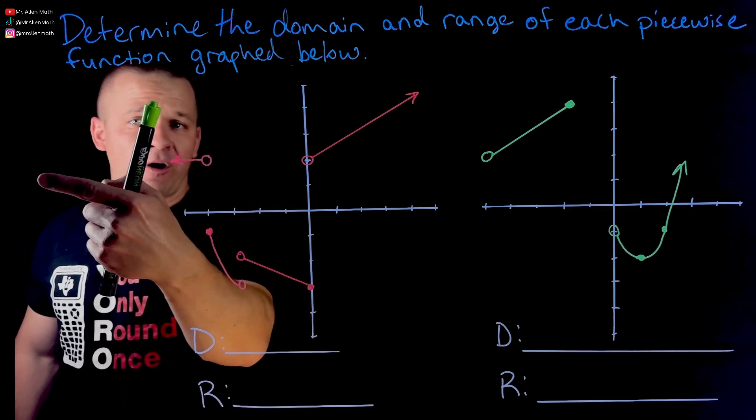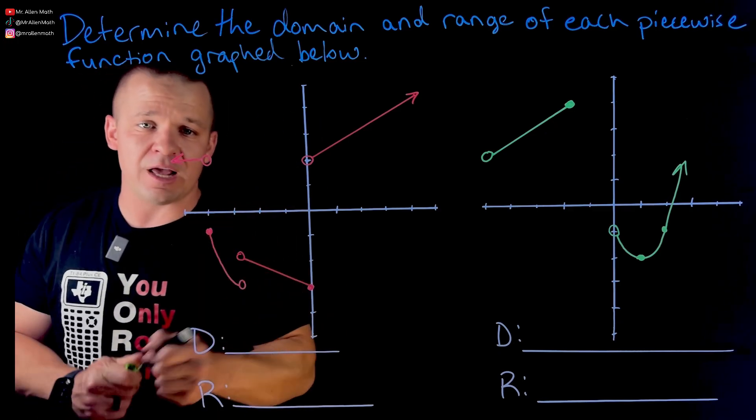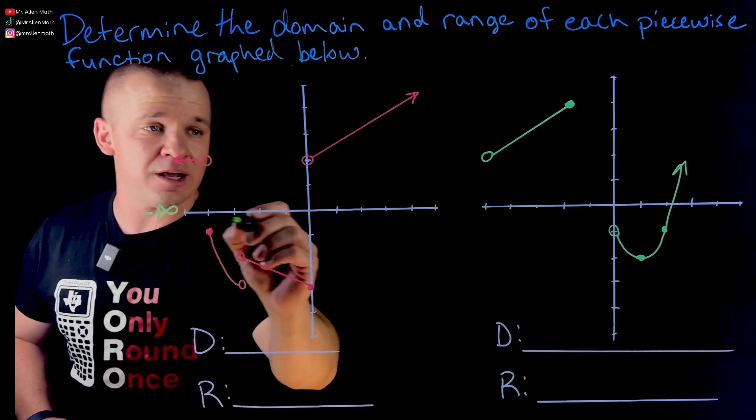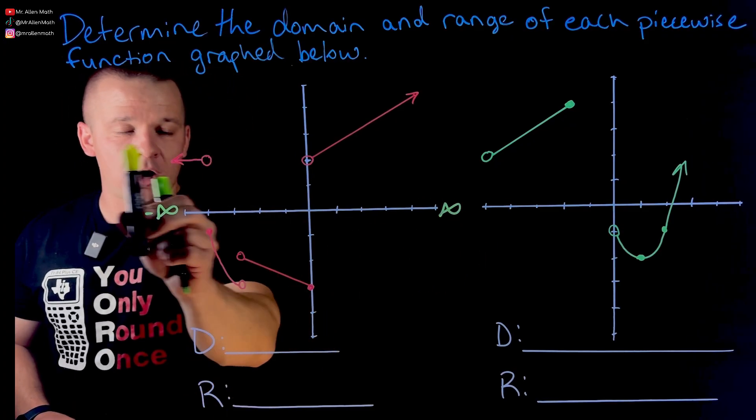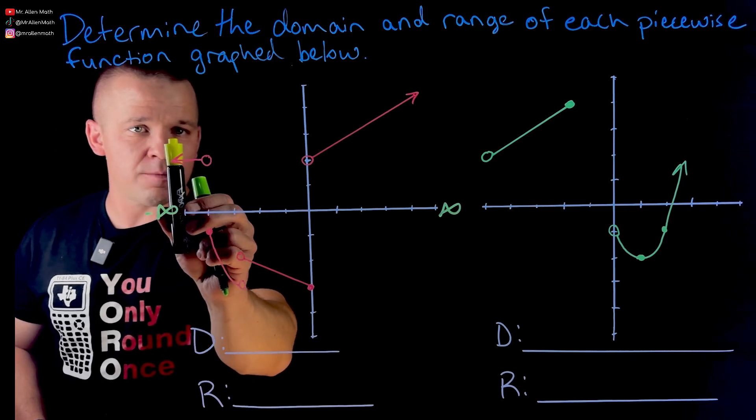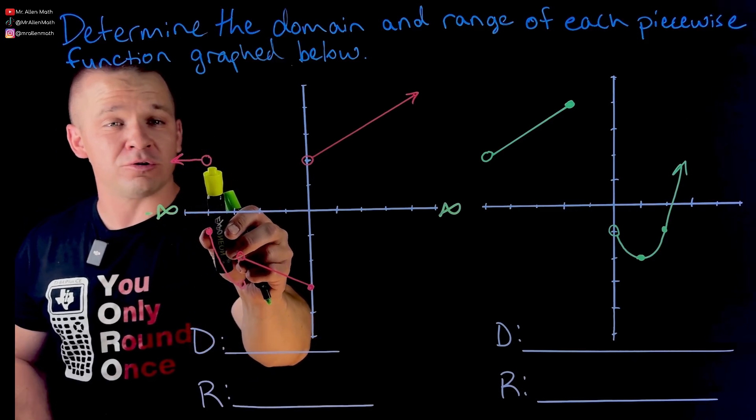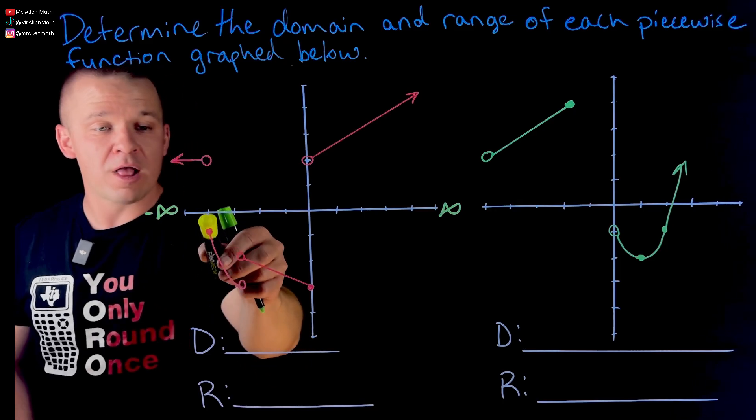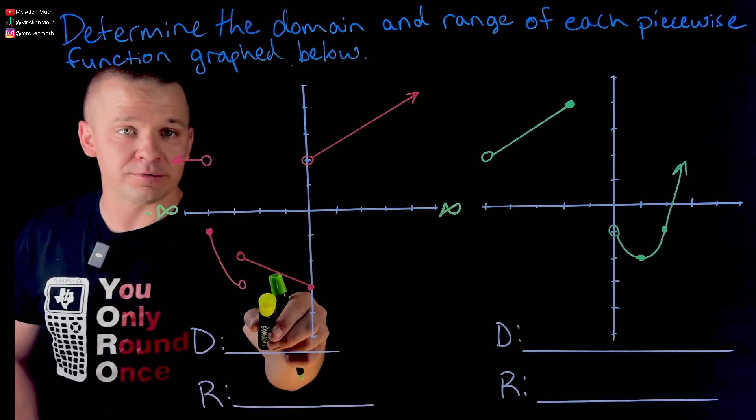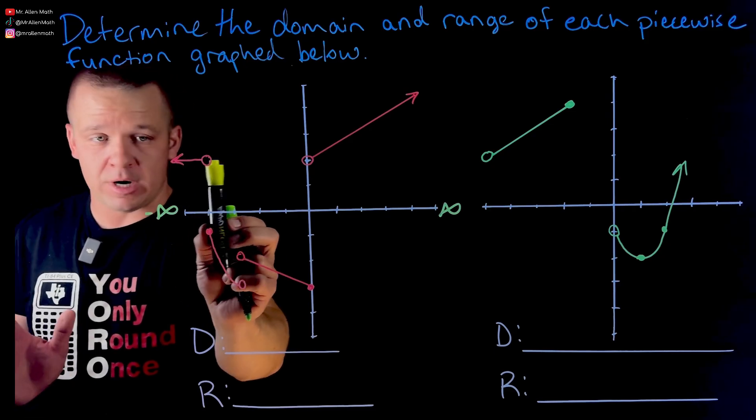So over here, this graph goes far left, all the way to negative infinity. I'll write a negative infinity here and a positive infinity there. Now as I come across this graph, open circle. Should I eliminate that? No, cause it still exists down here. We got a closed circle on this little quadratic looking portion, right? So we're going to keep including it.